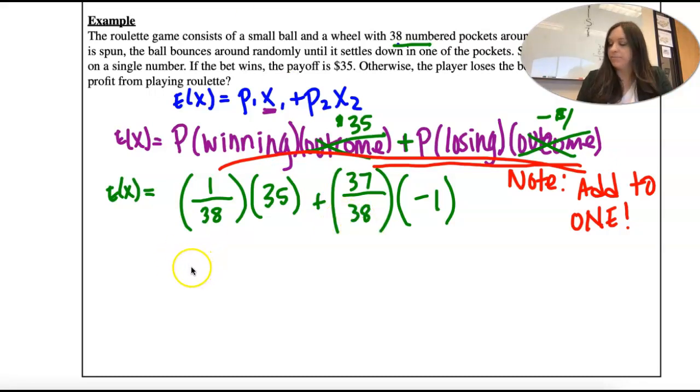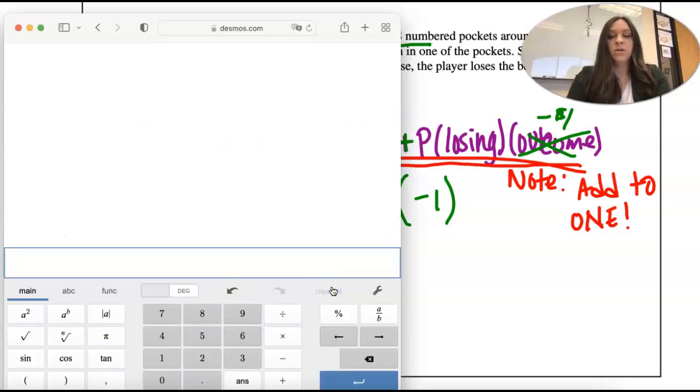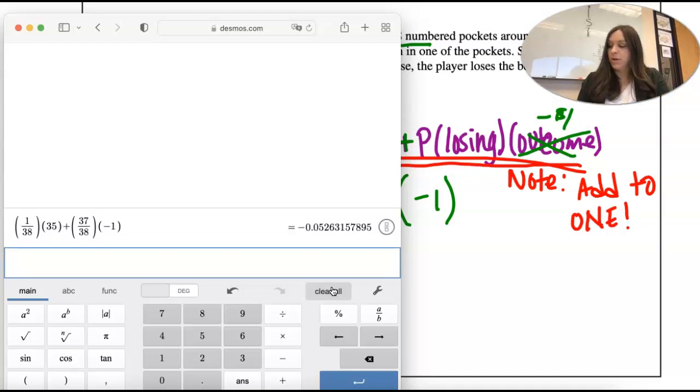Okay, now we're going to calculate. So we're going to put this in. That's from the last section. 1 out of 38. If we win, we get $35. 37 out of 38. We're going to lose. Minus 1.